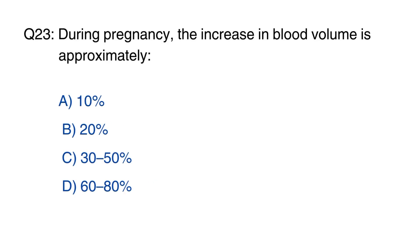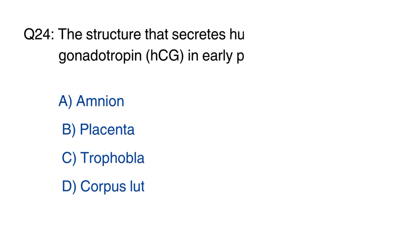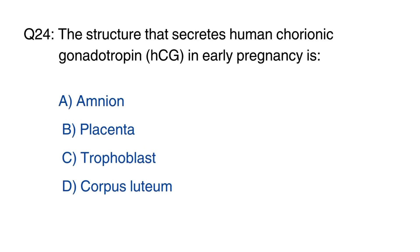Question 23: During pregnancy, the increase in blood volume is approximately? The right option is option C, 30 to 50%.